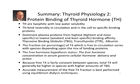In summary: thyroid hormones are lipophilic with low water solubility and bind reversibly — in circulation and within the cell — to specific binding proteins. The dominant plasma binding proteins, from highest to lowest affinity, are TBG (thyroxin binding globulin), transthyretin, and albumin. The fraction of T4 that is free in circulation varies with species depending on the mix of these binding proteins. This is clinically important because it is the free hormone concentration in serum that determines the metabolism and action of the hormone. Because free T4 is fairly constant between species, total T4 will generally be higher in species with higher amounts of TBG. Accurate measurement of the free T4 fraction is best performed using equilibrium dialysis techniques, which we'll cover in the diagnostic units.